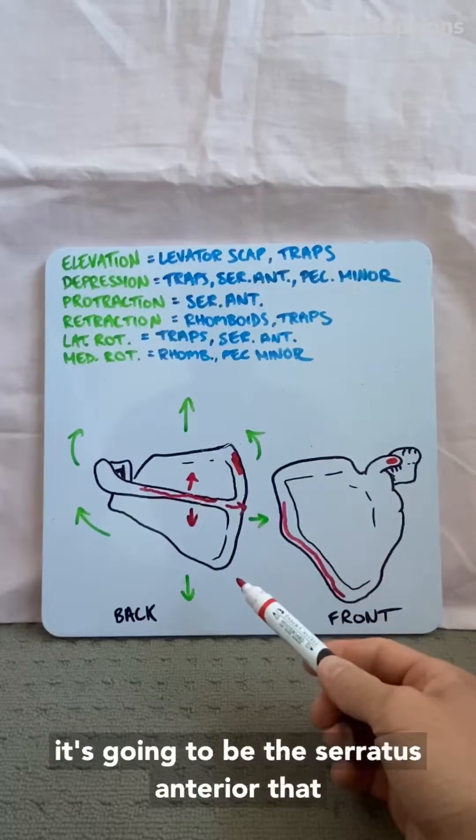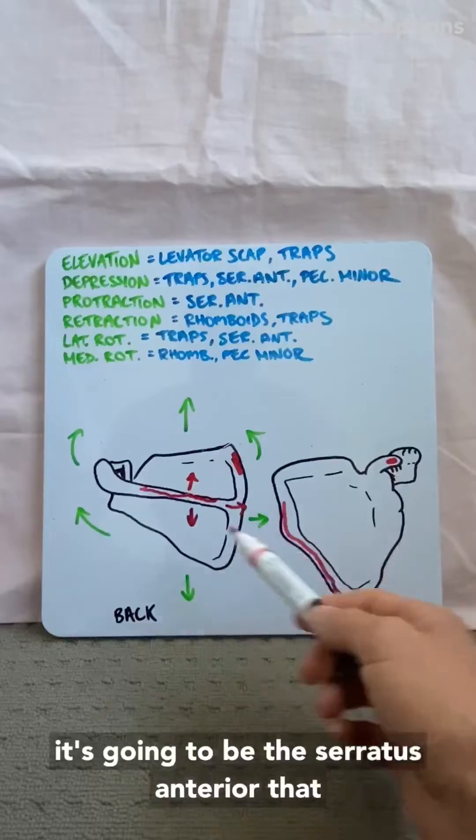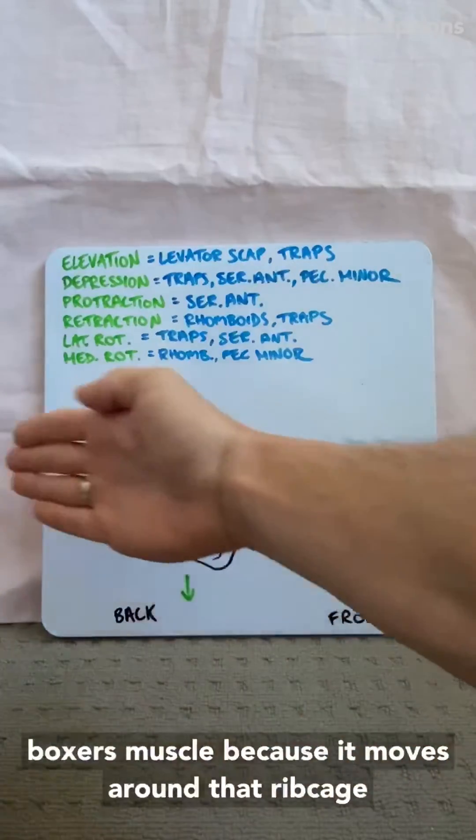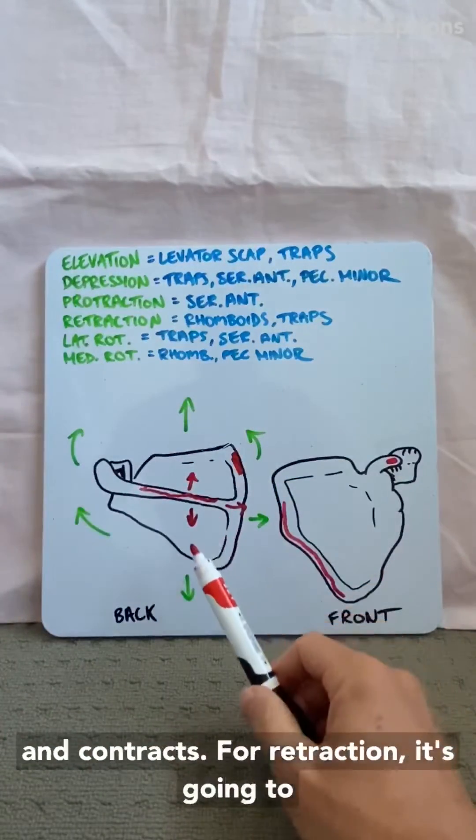For protraction, it's going to be the serratus anterior — that boxer's muscle — because it moves around that rib cage when it contracts.